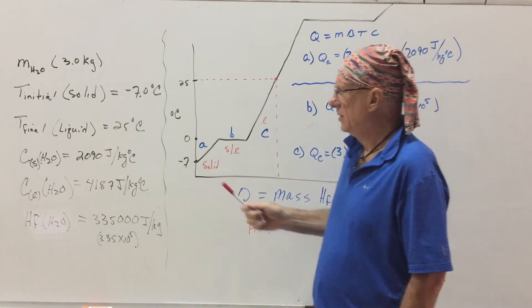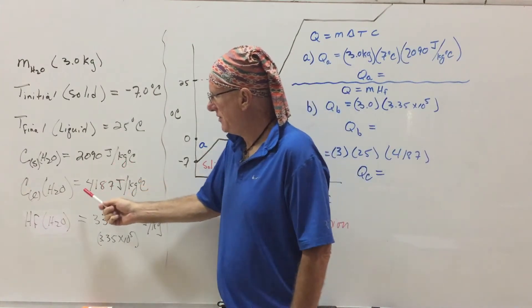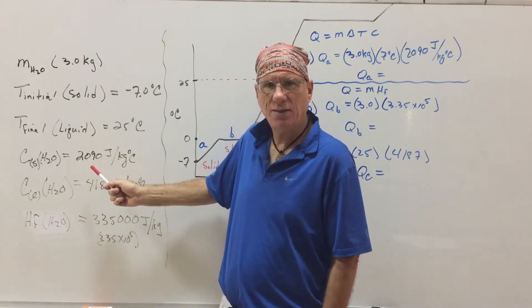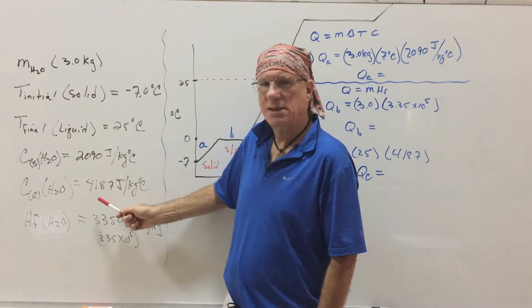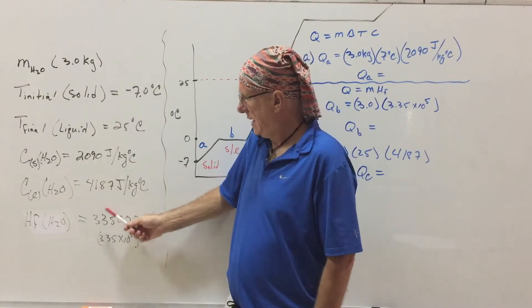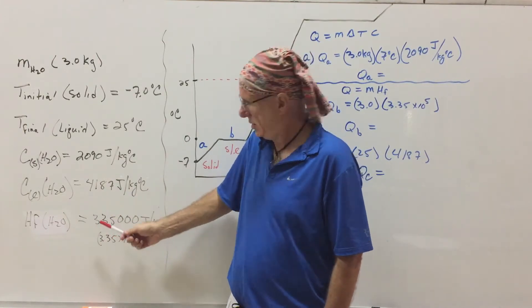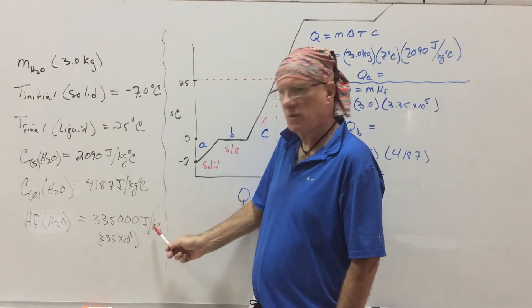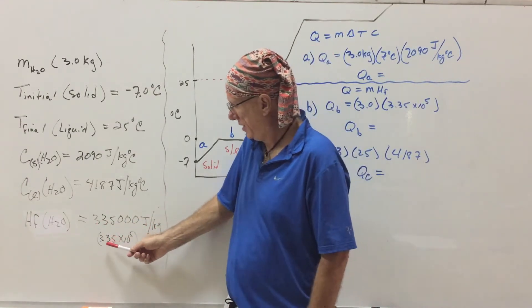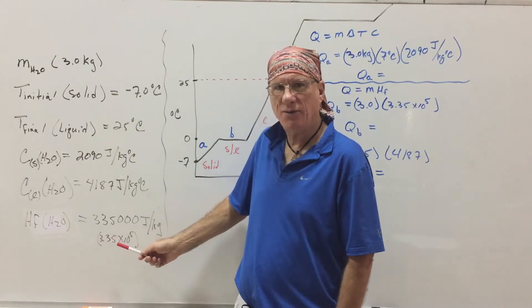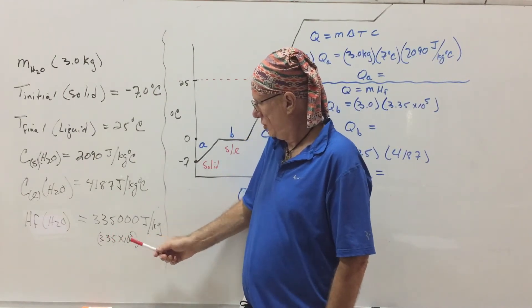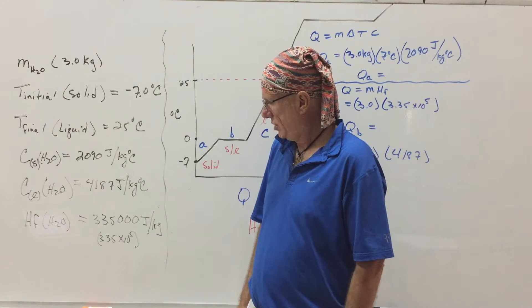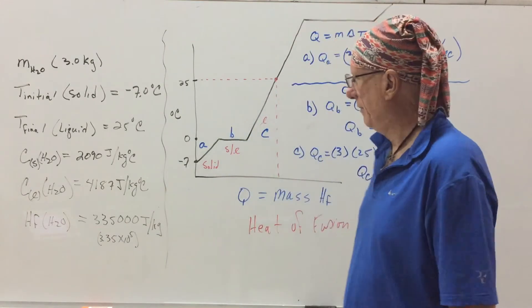So, this is the specific heat capacity of solid water, ice. This is liquid water, just water. And this is the heat of fusion. 335,000 joules per kilogram, or simply 3.35 times 10 to the 5 joules per kilogram.